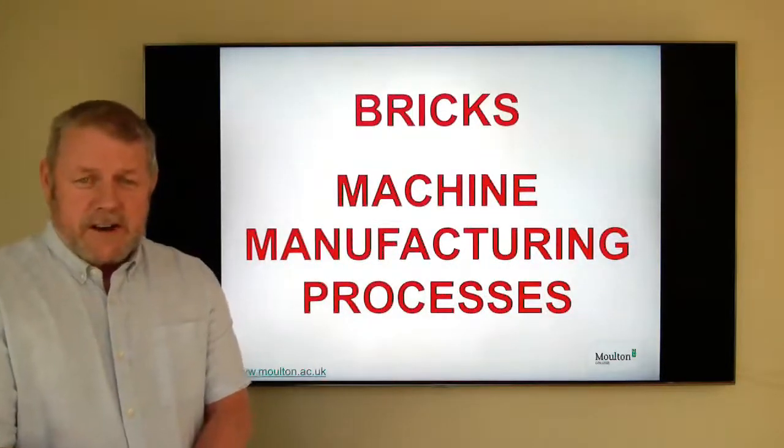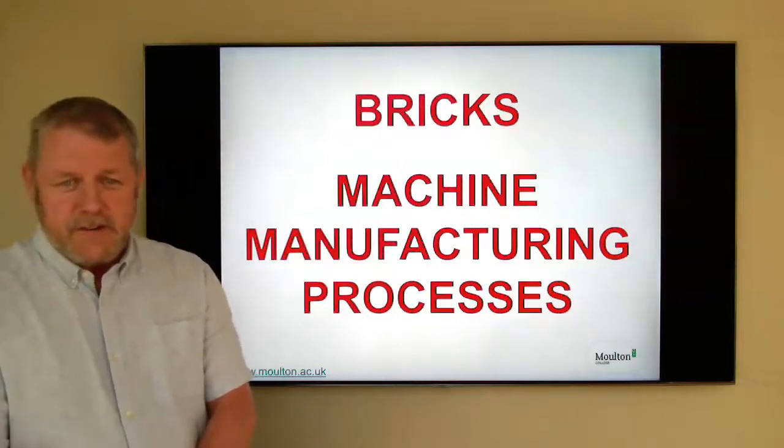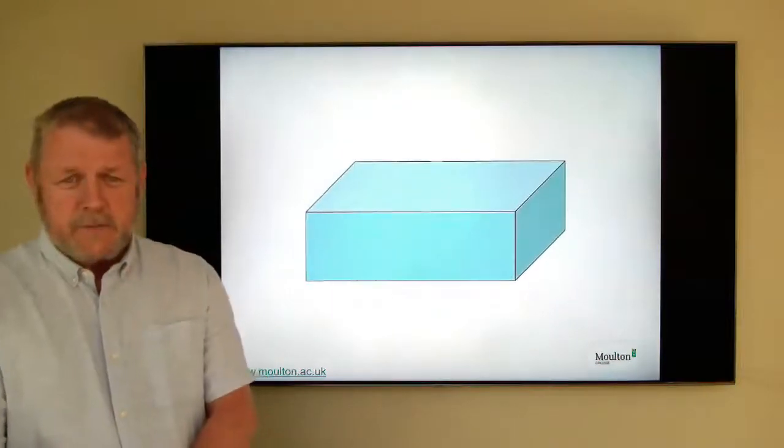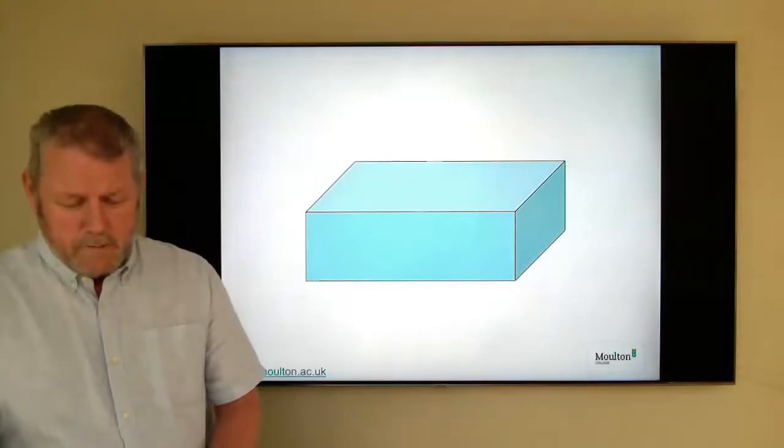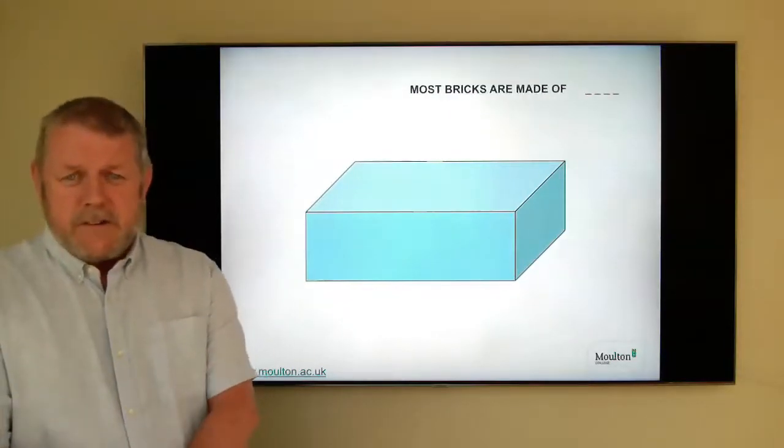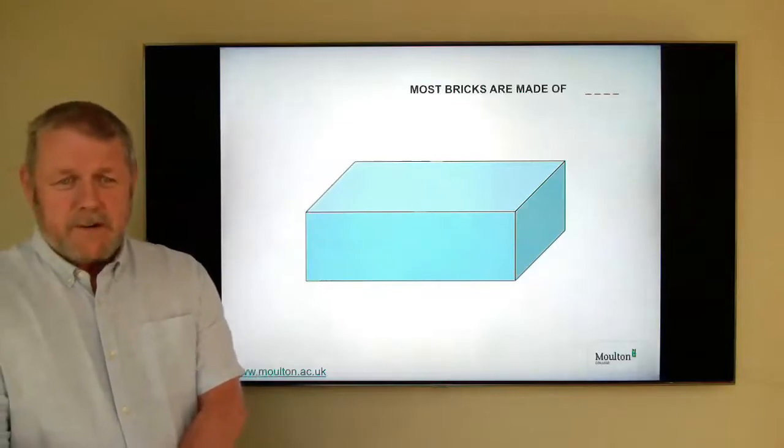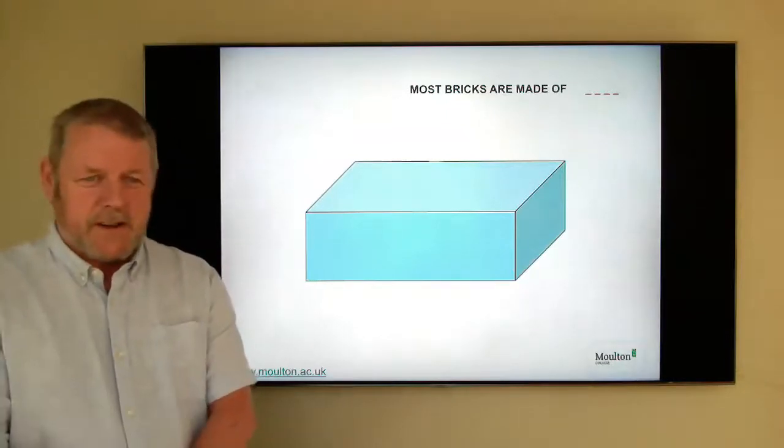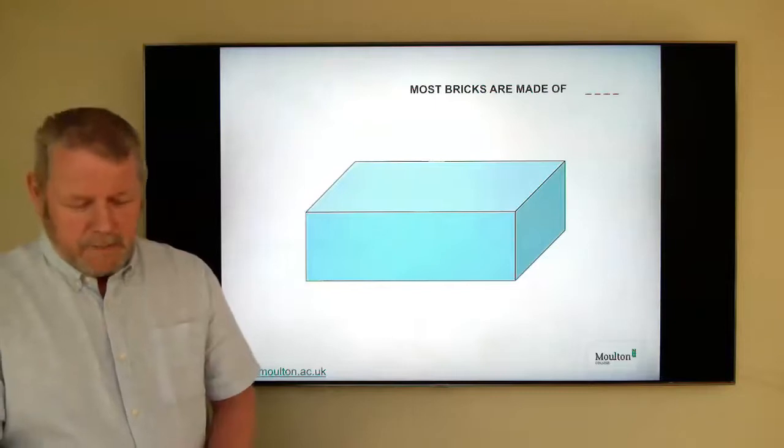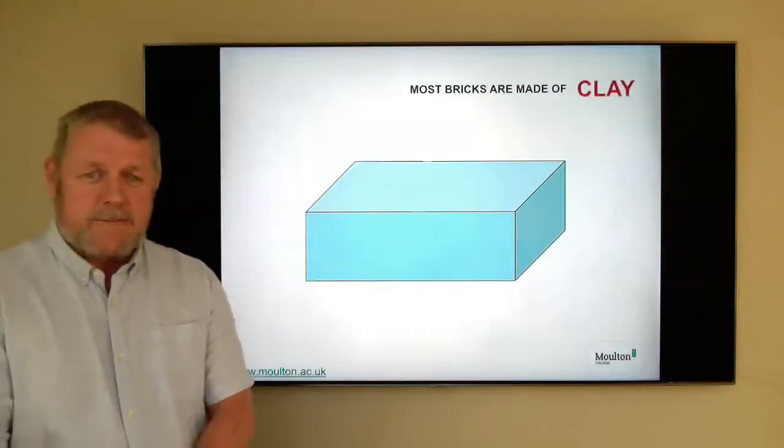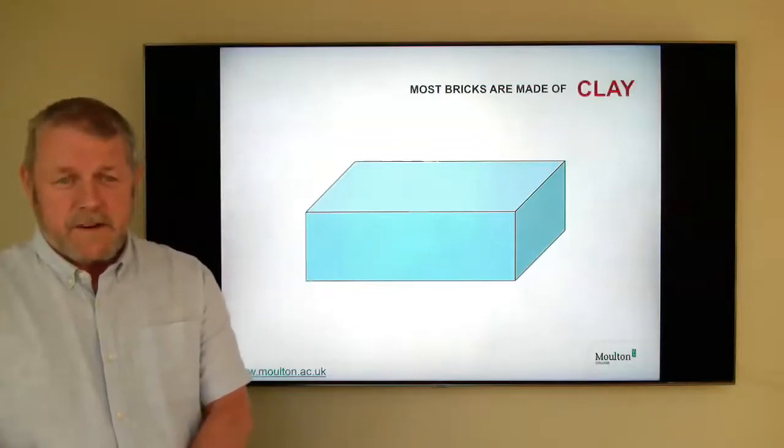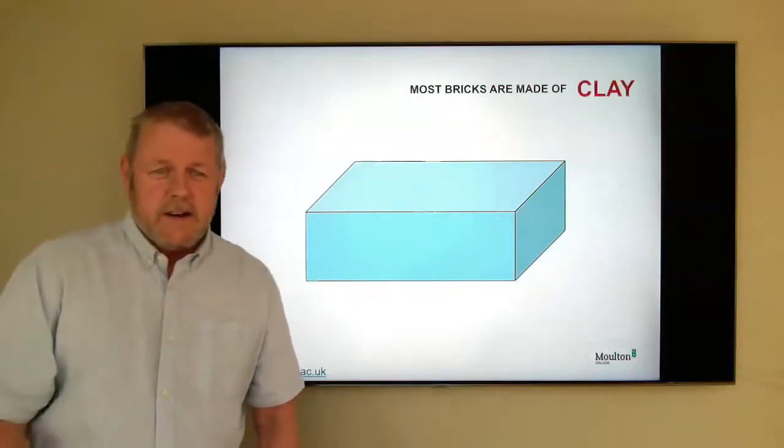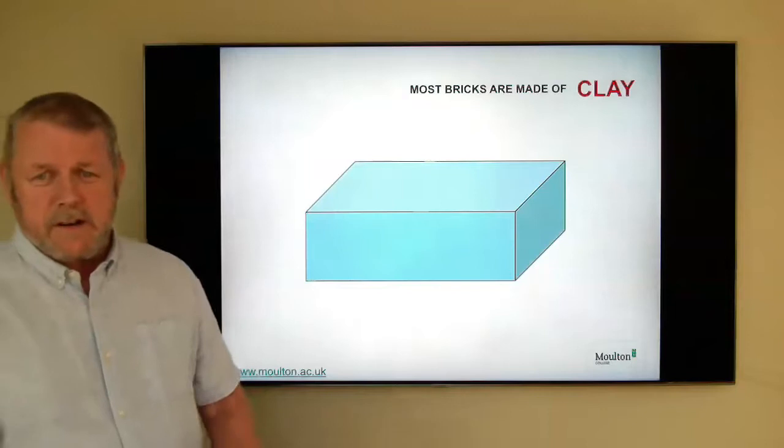We're going to look at firstly how bricks are made and the terminology around bricks. You can get handmade bricks but the vast majority of bricks are machine manufactured by one of two methods. Ninety-nine percent of what you'll be laying as a brick layer will be made of clay and formed into the shape of a brick, that rectangular shape that you can see there, and then fired at a really high temperature in order to make it solid, compact and robust.